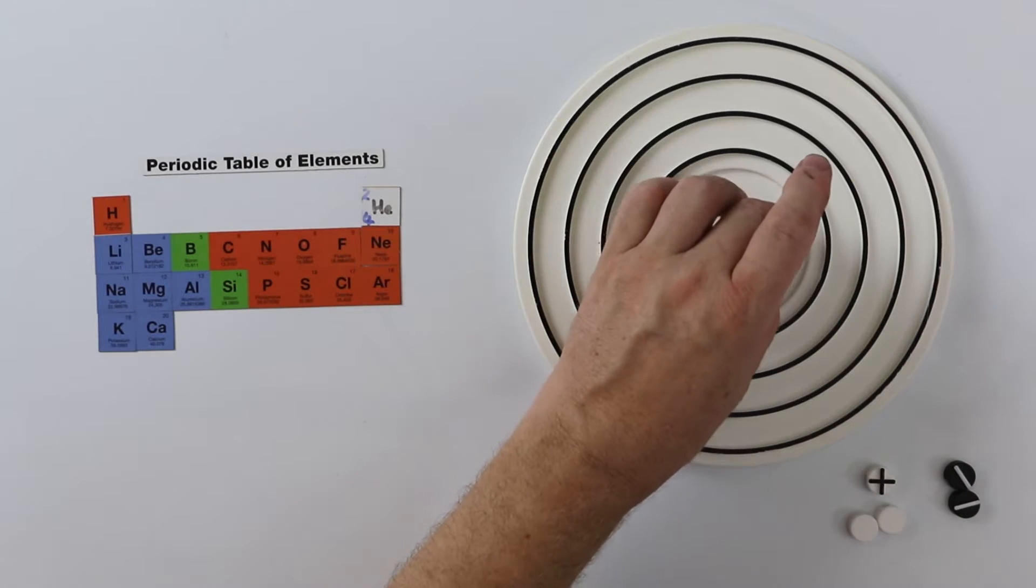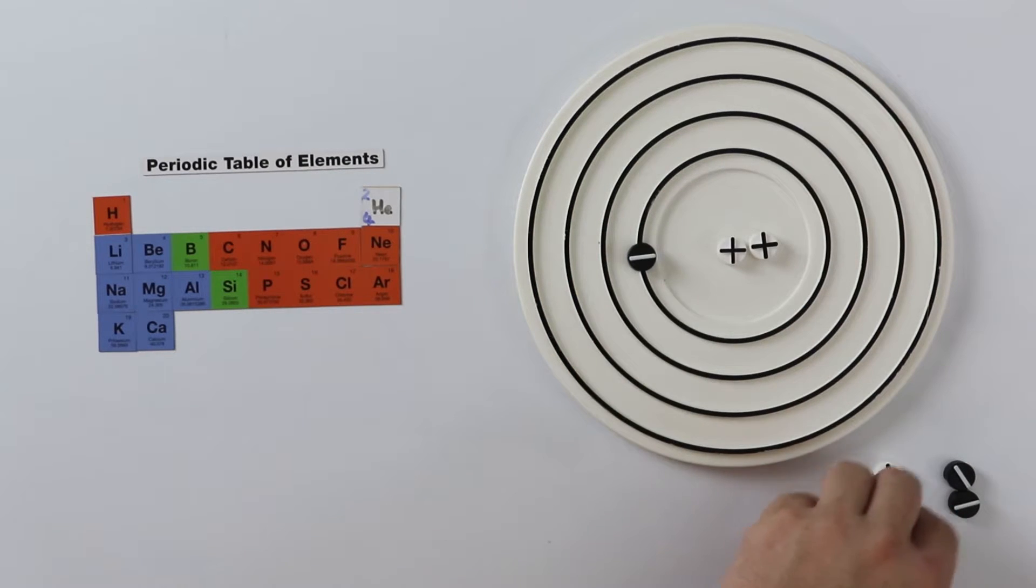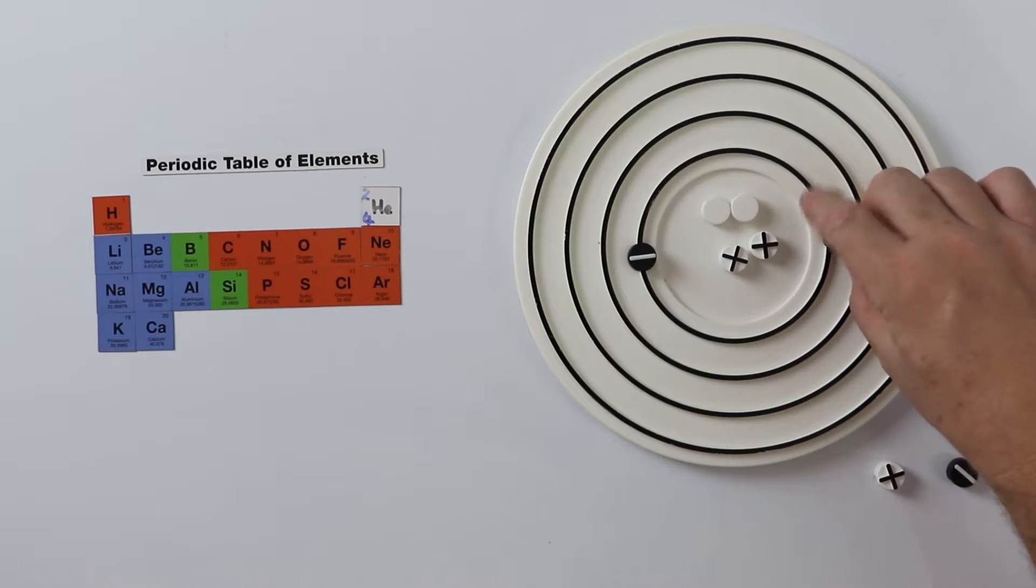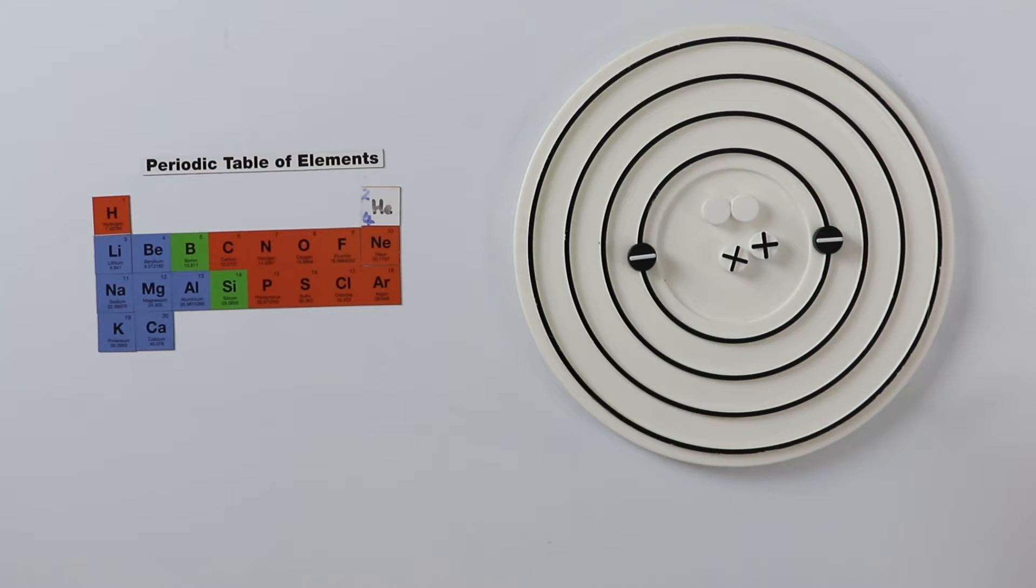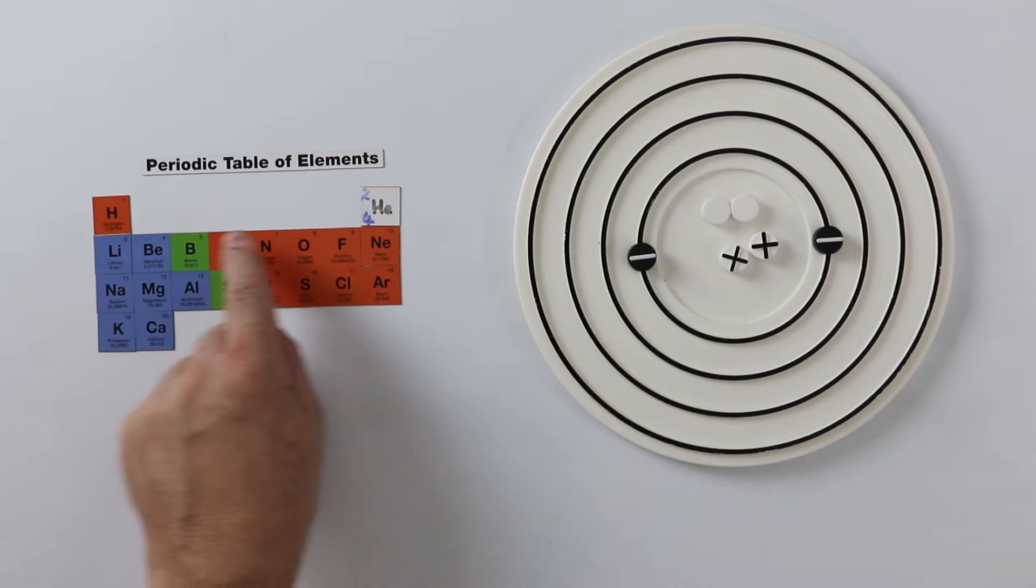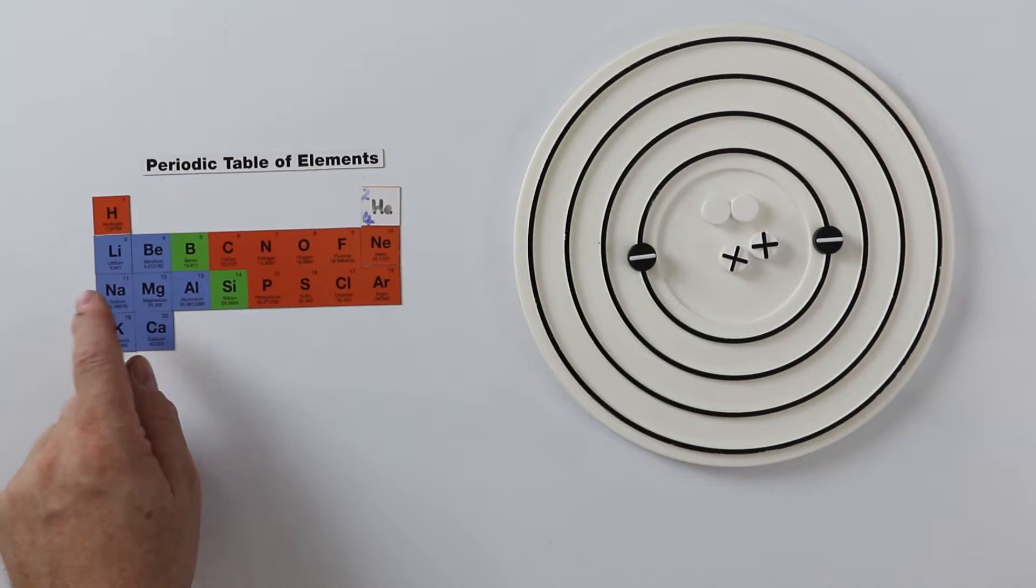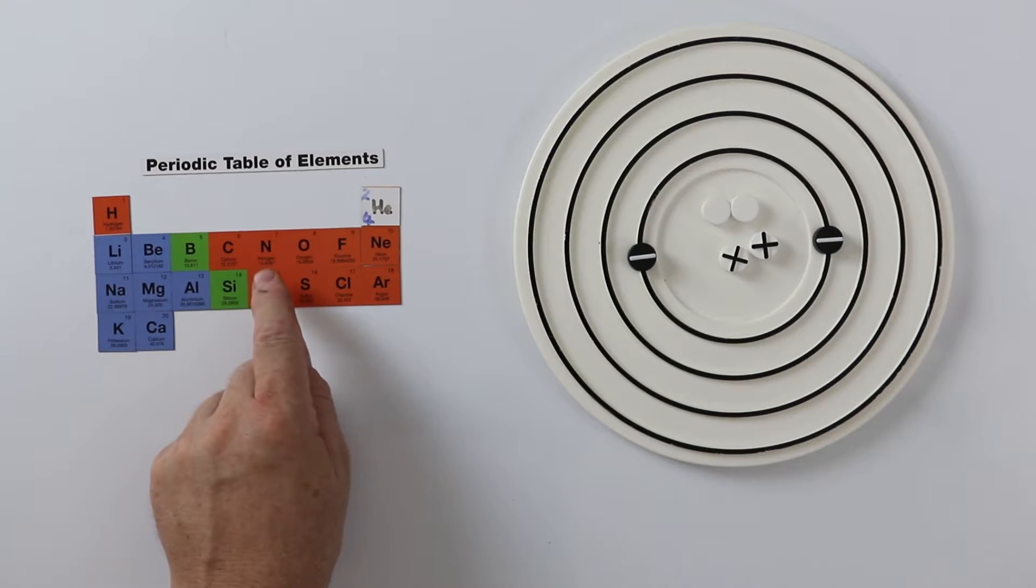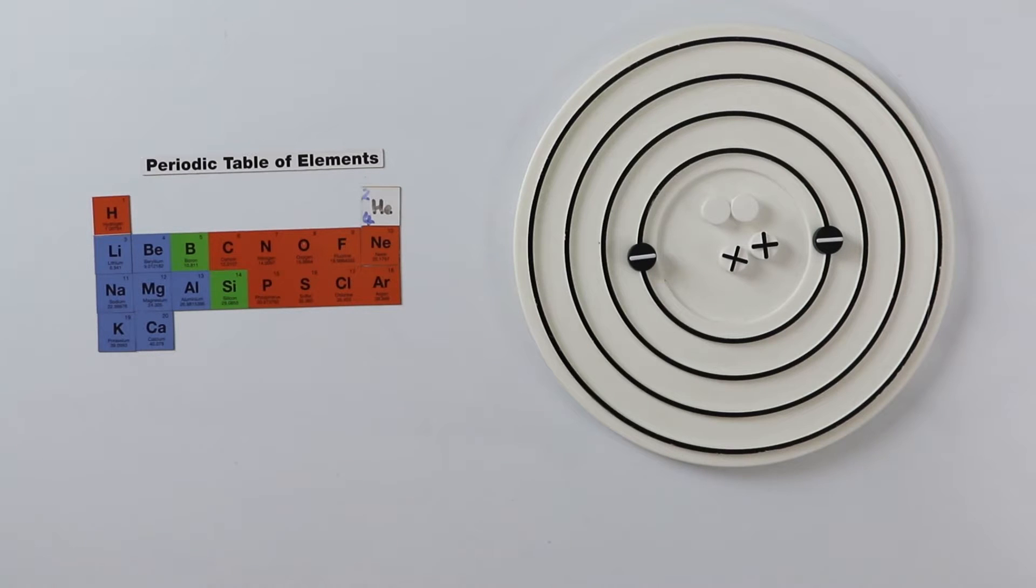For GCSE you have to learn all the elements up to calcium, which I have shown here on this periodic table. This is very easy, because as you move along the row or period, the protons increase by one. And as a rule of thumb, the atoms have approximately the same number of protons and neutrons, within one or two in the nucleus.